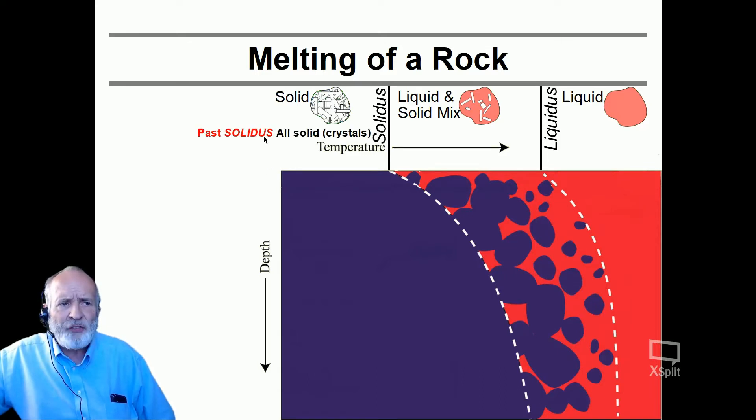Now, past the solidus here, past that line, we have all solid. Everything is crystal. And past the liquidus, past this line, we have a complete melt. There's not one single crystal left.